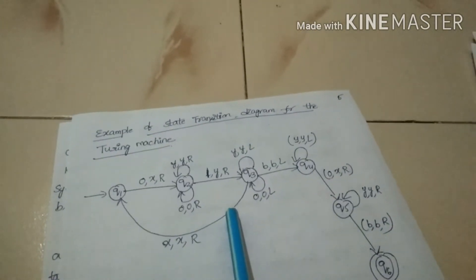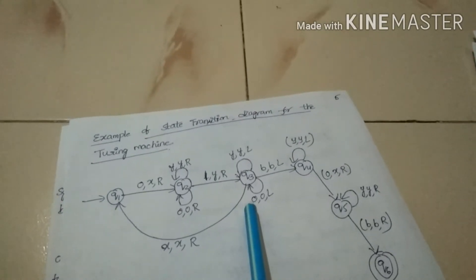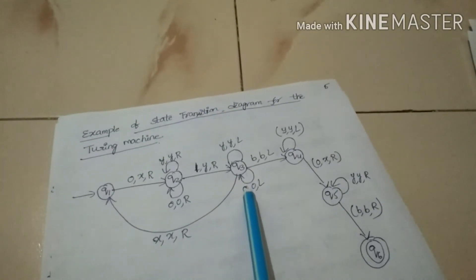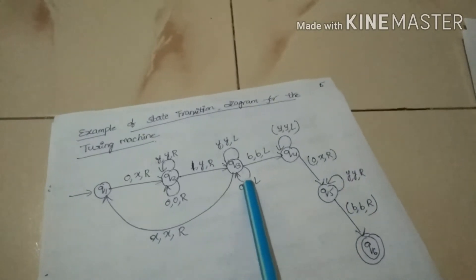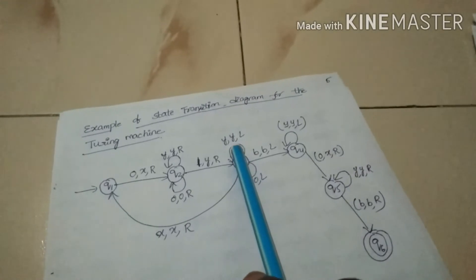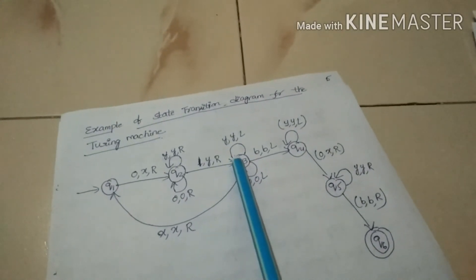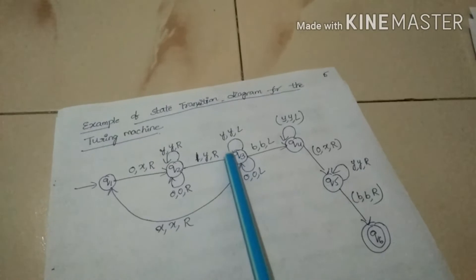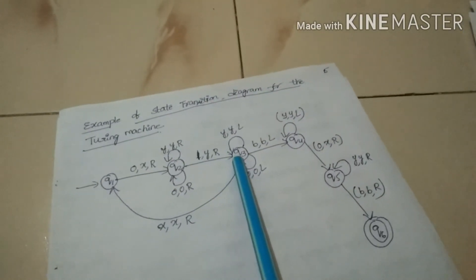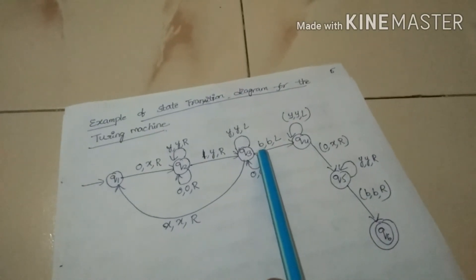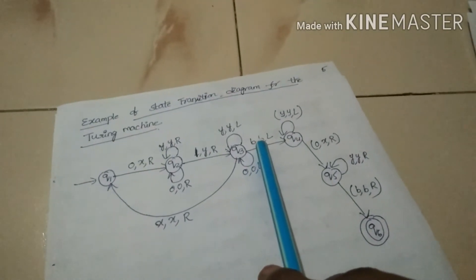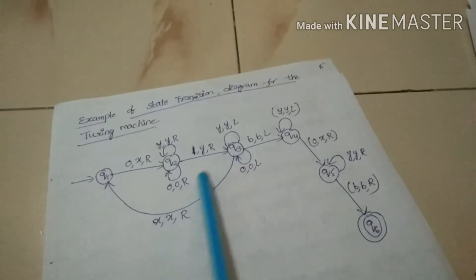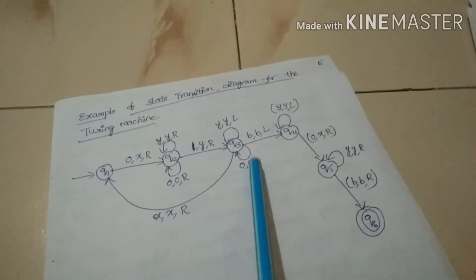At that point, the read-write head is scanning the value 0 and the state of the Turing machine is Q3. There is a loop at state Q3 in the state transition diagram that will shift the head position in the left direction without changing the value of the current cell or the state. The read-write head position is now at value Y. There is another loop for state Q3 that will move the head position to the left direction as well.